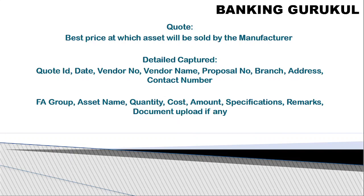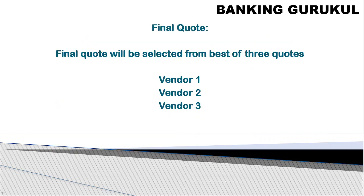When you are ready to purchase a fixed asset, you approach dealers or manufacturers for the best price — this process is called getting a quotation. Normally, quotations are collected from multiple vendors. Details captured include: quotation ID, date, vendor name, vendor number, branch, address, contact number, fixed asset name, quantity, cost amount, specifications, and any remarks. Any official letter or quotation document from the manufacturer or dealer can also be attached to the system for verification.